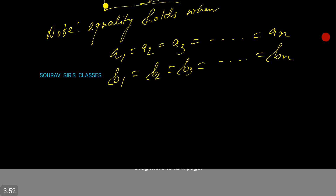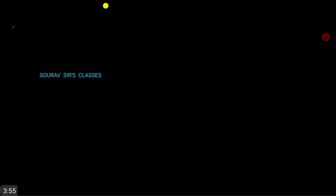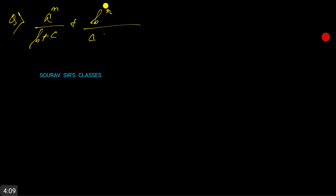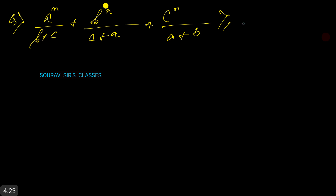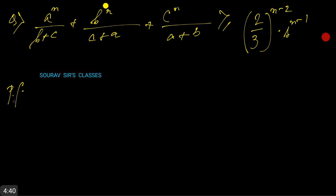Let's do a problem on the next page. The question asks us to prove: aⁿ/(b+c) + bⁿ/(c+a) + cⁿ/(a+b) ≥ (2/3)ⁿ⁻² · sⁿ⁻¹, where s = a+b+c. We will use two inequalities in the proof.